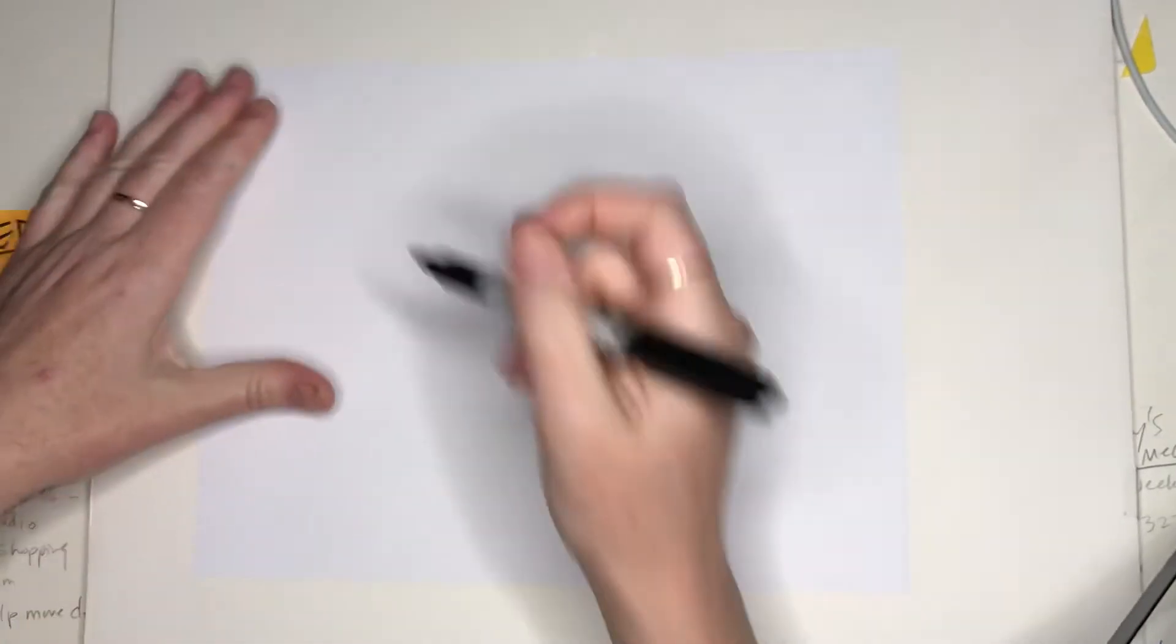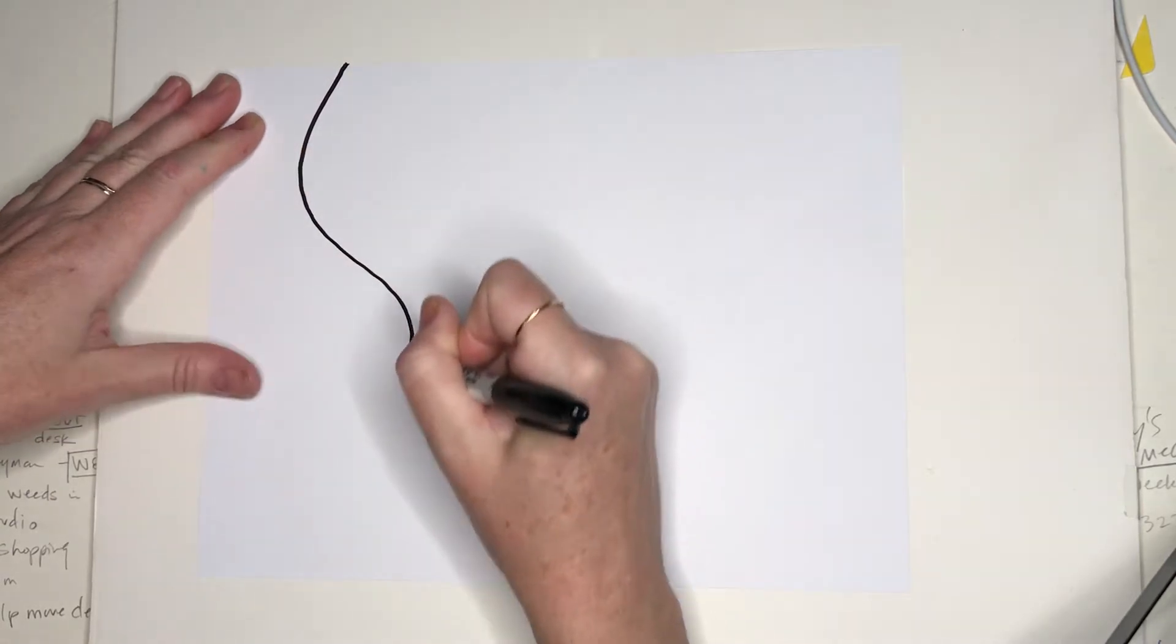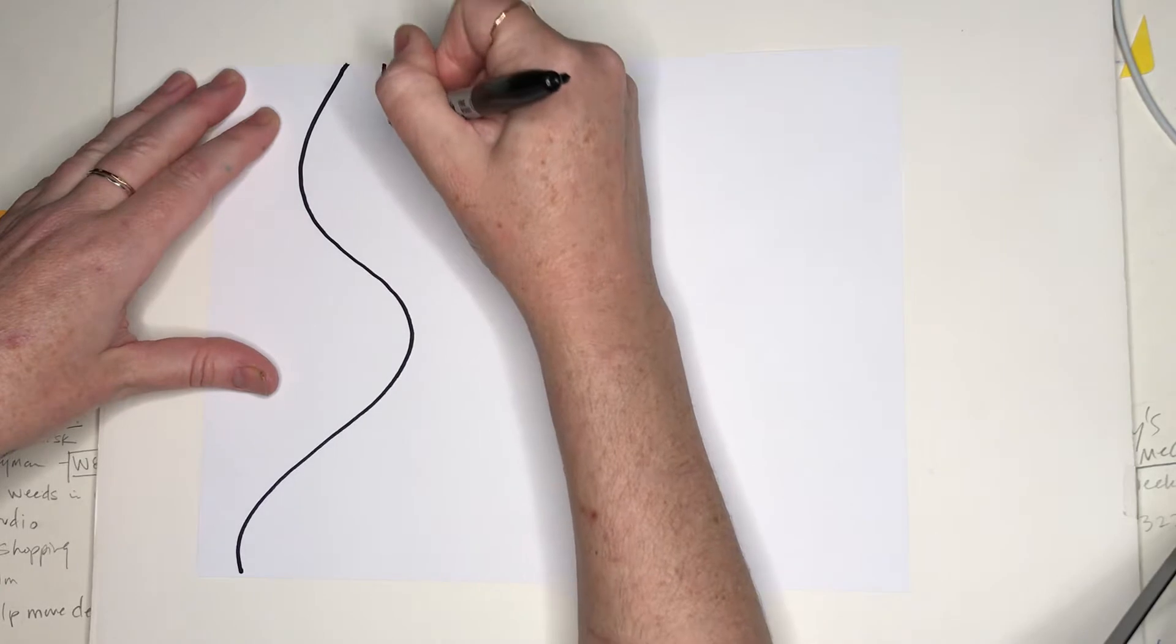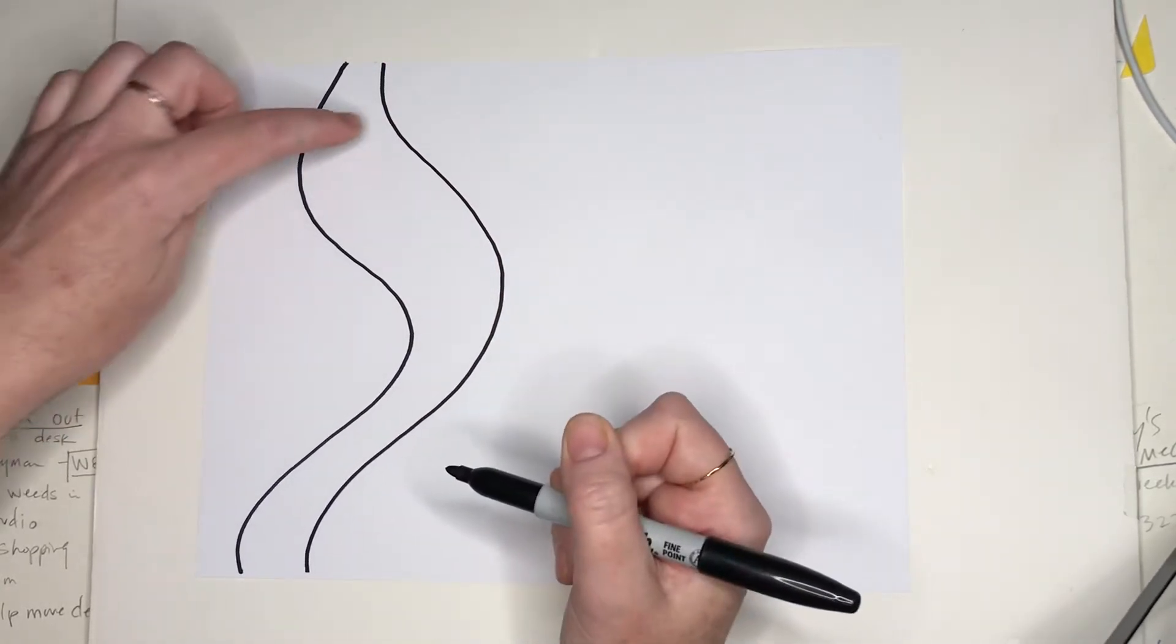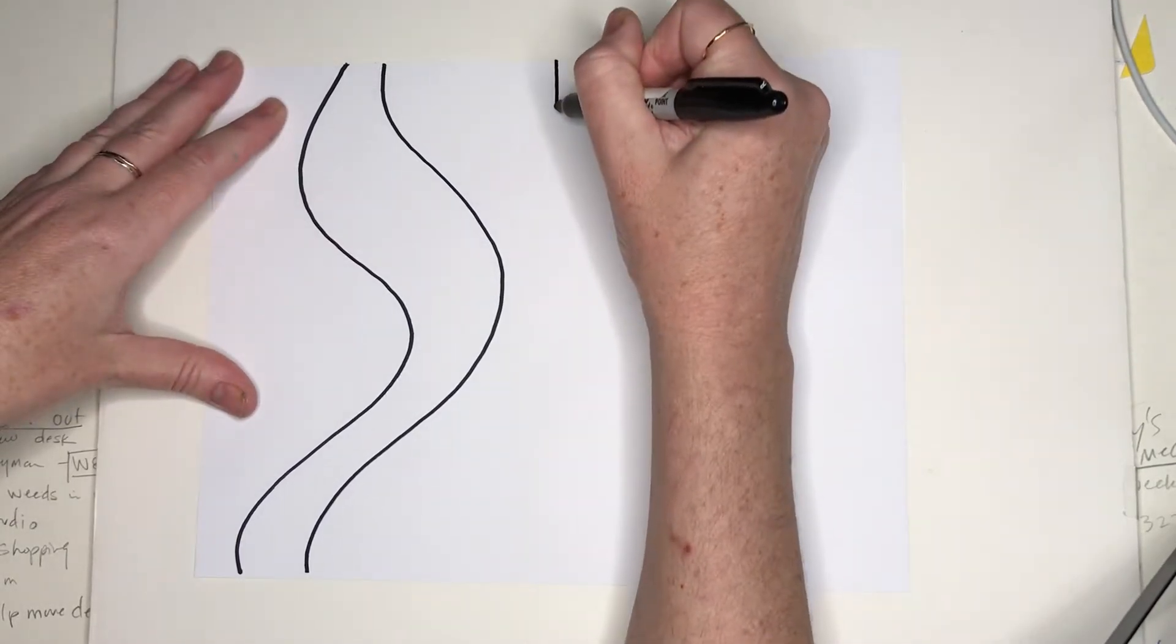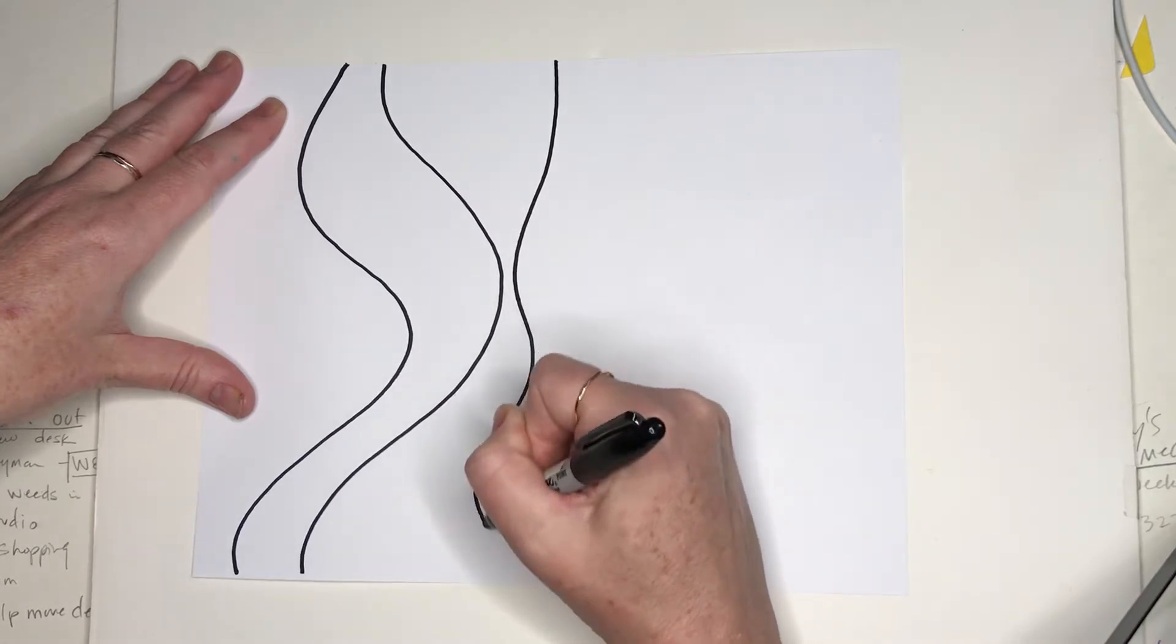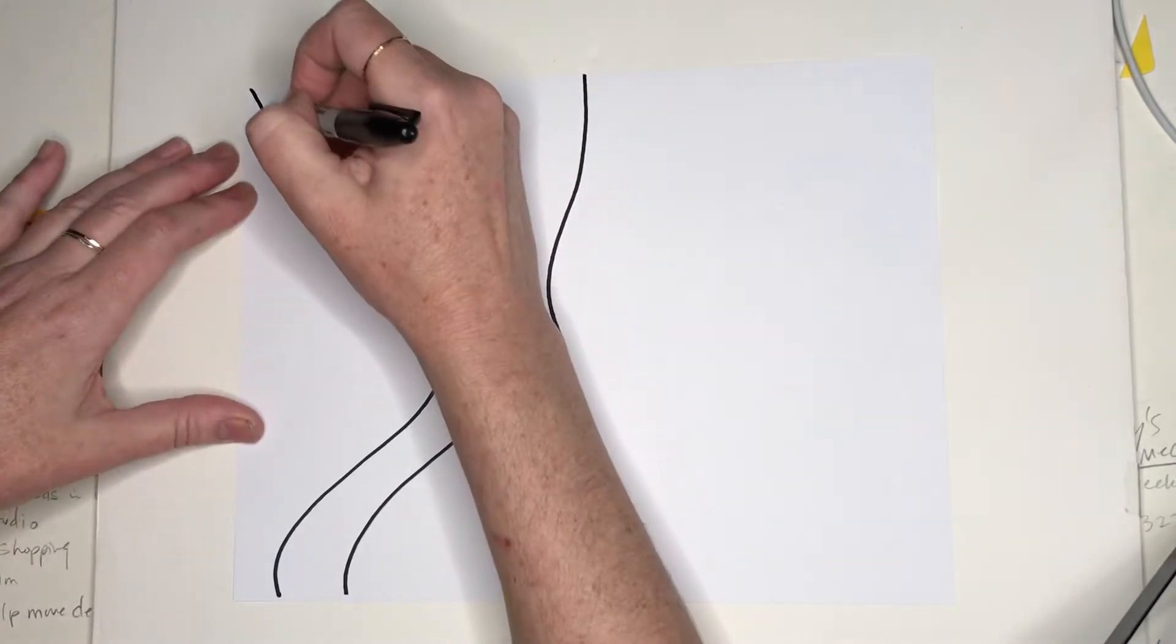So first thing I'm going to do is divide up my paper with some really curvy lines. You really want them to be curvy. Don't be scared to curve too far out. And when you do your second lines, you want to change the amount of space in between the lines. For example, this is really far spaced, this gets really close, and then this curves back out. So you're really having some various spaces there.